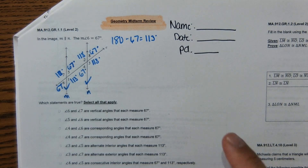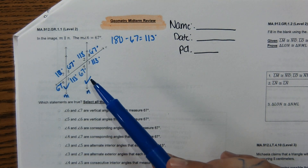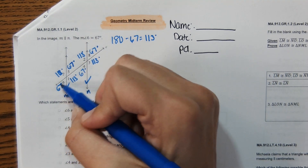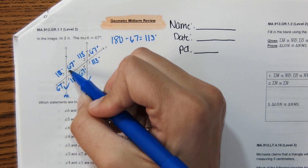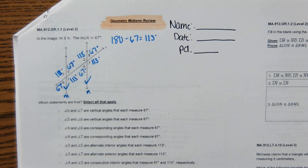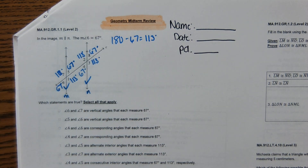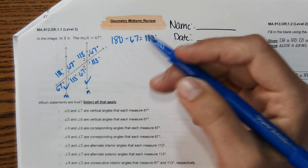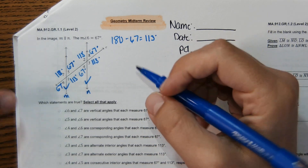All the angles here are going to either be equal to 67 or supplementary. If you have trouble with this, notice that all the acute angles are equal and all the obtuse angles are equal, so you can label it that way. Since you're doing the test on a computer screen, it might be helpful to sketch this out on a piece of paper and label it so you can just look at it while answering.